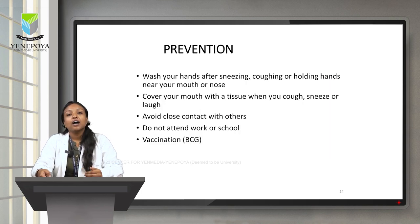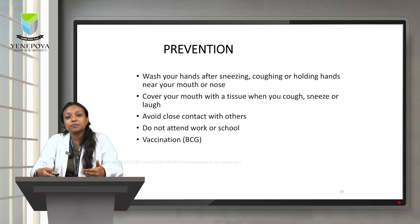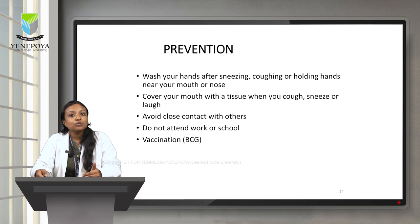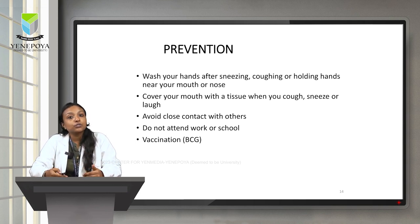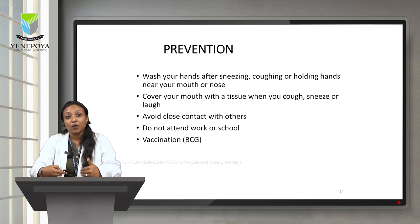Prevention — how to avoid getting this infectious condition. Wash your hands after sneezing, coughing, or holding your hands near your mouth or nose. TB spreads through air droplets, so avoid direct contact with infected persons. Cover your mouth with a tissue when you cough, sneeze, or laugh. Isolate yourself and avoid close contact with others. Do not attend work or school if you have pulmonary tuberculosis. Most significantly, BCG vaccination is provided to prevent getting this condition.